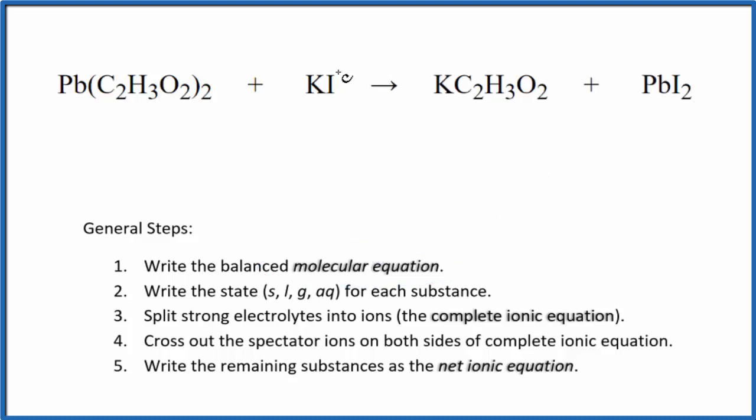So when we look at the molecular equation, I have one iodine here and then two here. Put a two in front of the potassium iodide. Now I have two potassium atoms and just one here. Put a two here. And that works out well because that two times our acetate, we have two acetate ions and then two acetate ions here. So those are balanced. We have one lead, one lead. So we're good. This is the balanced molecular equation.